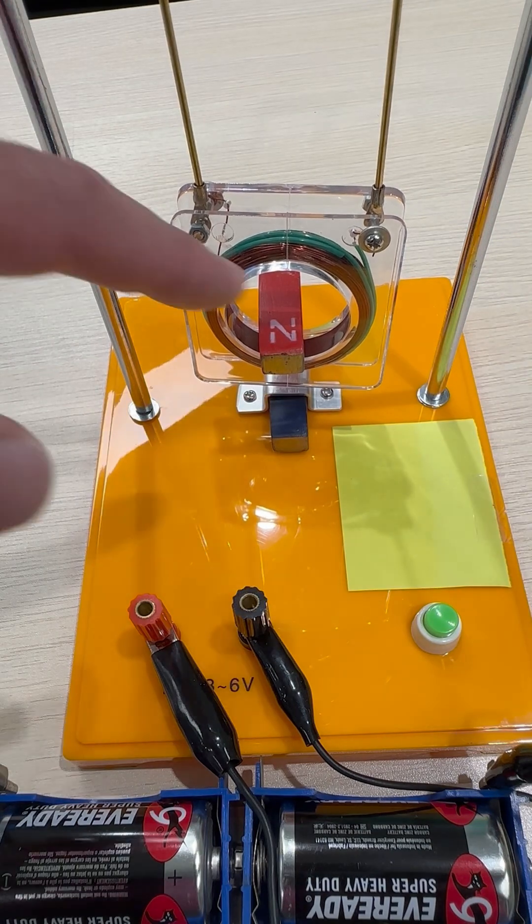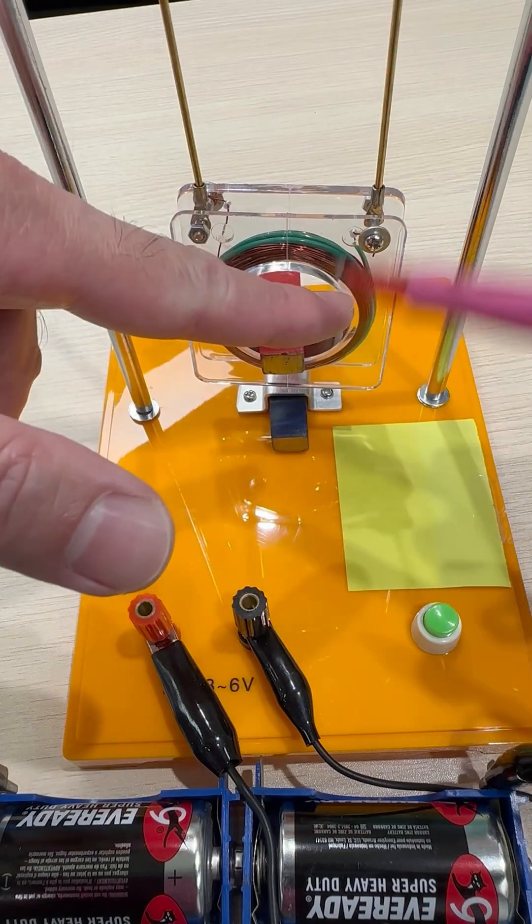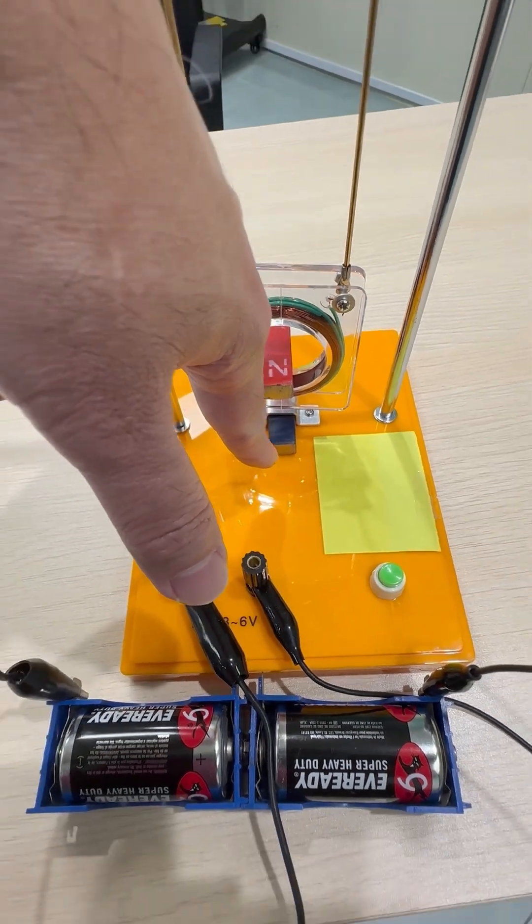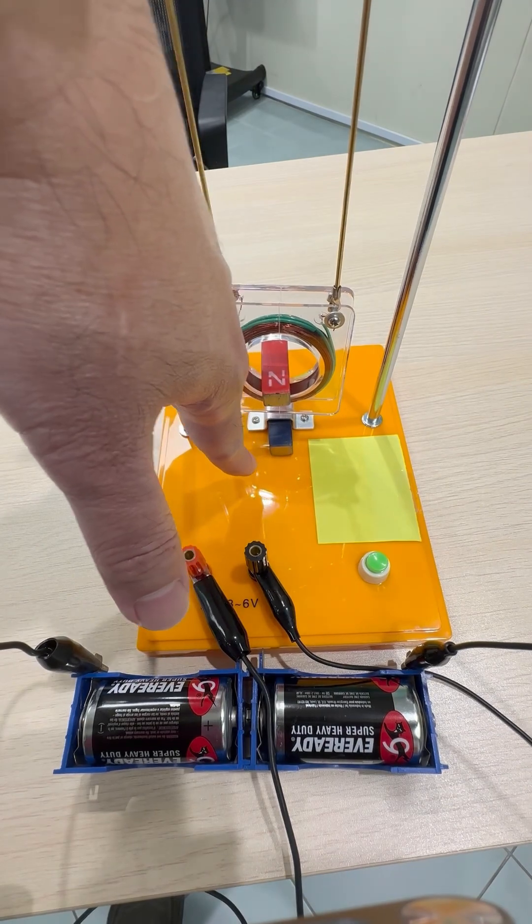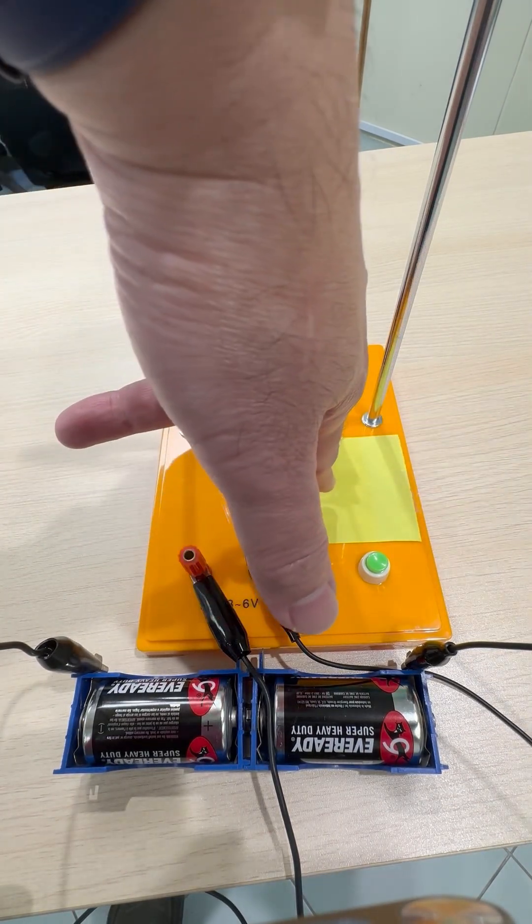So if we use Fleming's left-hand rule, the index finger being the magnetic field, it should be pointing down. Your index finger should be pointing down and the current should be flowing to the left.